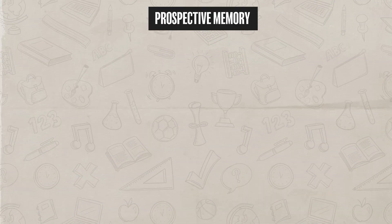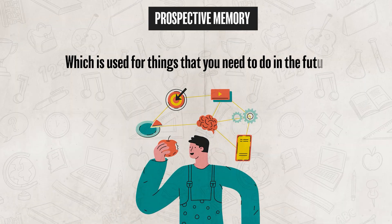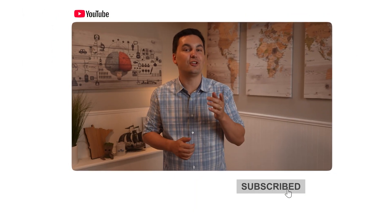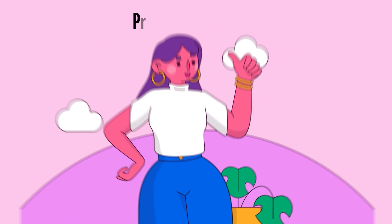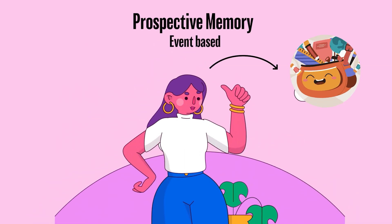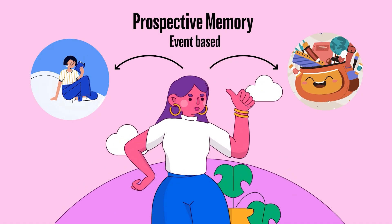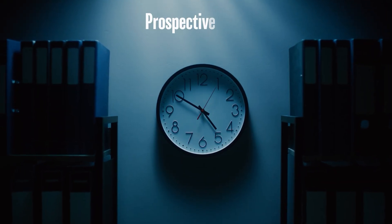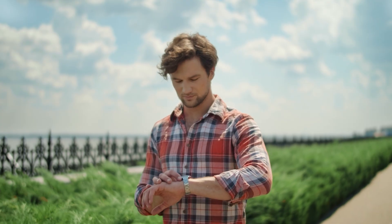The last type of memory to review is prospective memory, which is used for things that you need to do in the future — essentially, your mental reminders. For example, remembering that you have a big test tomorrow, remembering to take medication at 8am. Sometimes prospective memory can be event-based — for instance, you see your backpack and it reminds you that you need to study for your test. And sometimes prospective memory is time-based, such as remembering to do something at a certain hour.